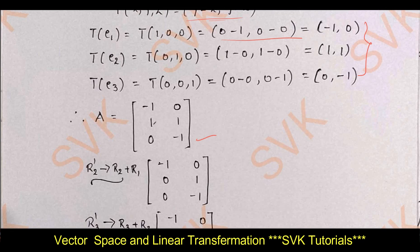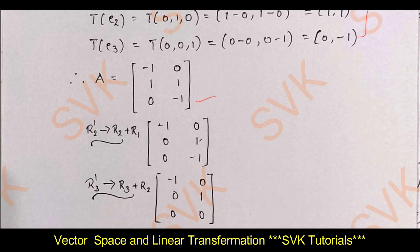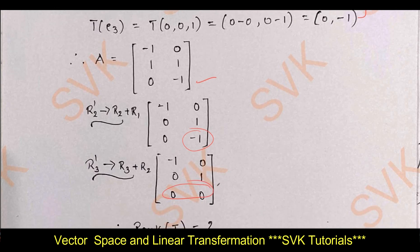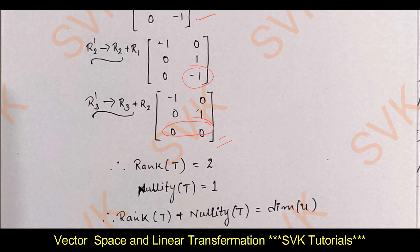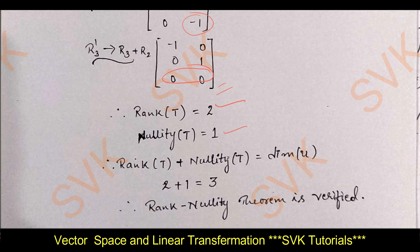Applying R2 → R2 + R1 gives (0, 1) in the second row, and R3 → R3 + R2 makes the third row zero. Looking at the final matrix: the number of non-zero rows is 2, so rank(T) = 2; the number of zero rows is 1, so nullity(T) = 1. Therefore rank(T) + nullity(T) = 2 + 1 = 3 = dimension of the domain. Hence the rank-nullity theorem is verified. This is a very easy topic to score if you know the concept and how to solve the problems.